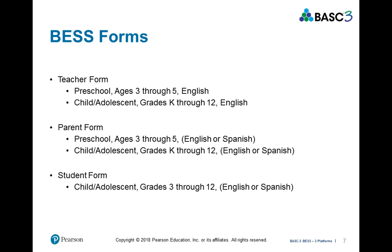There are three forms included in the BESS: a teacher form, a parent form, and a student form. For each of the teacher and parent forms, there are two separate forms. The teacher form has a preschool form for ages three through five, and a child and adolescent form for grades K through 12. For the parent form, there's a preschool form and an adolescent form as well. The student form is a child-adolescent form that starts with students in grade three and goes through grade 12.